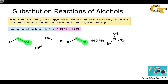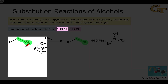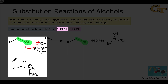In thinking about the mechanism, the first thing to notice is that PBr3 is a great electrophile — a phosphorus atom connected to three relatively electronegative bromine atoms. The alcohol hydroxyl can operate as a good nucleophile, giving us the ingredients for an SN2 elementary step. The first step is the displacement of bromide by the alcohol hydroxyl oxygen, producing an intermediate in which the oxygen is now positively charged, and bromide (Br⁻) has been generated.